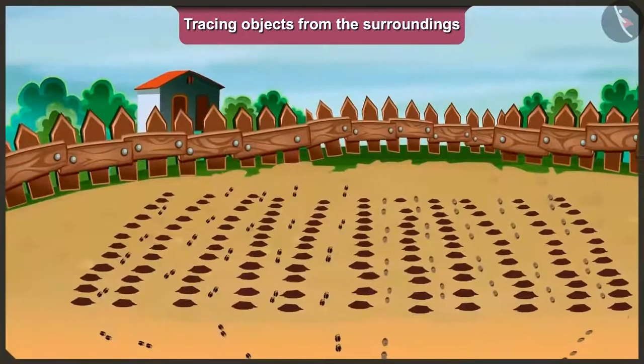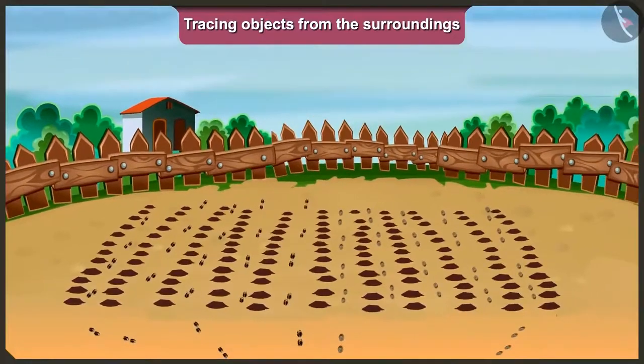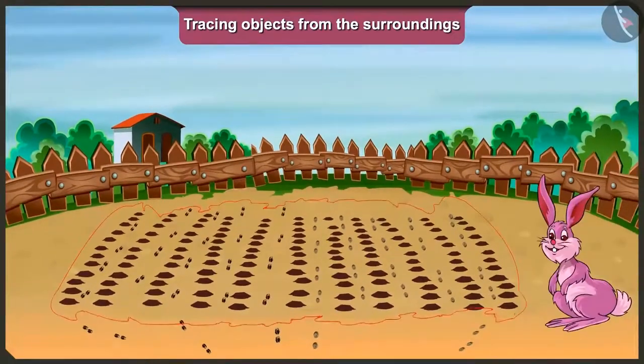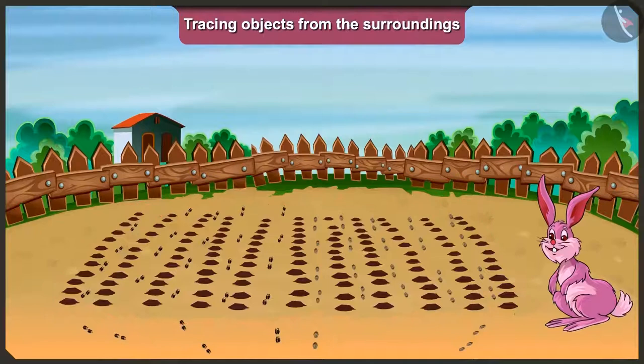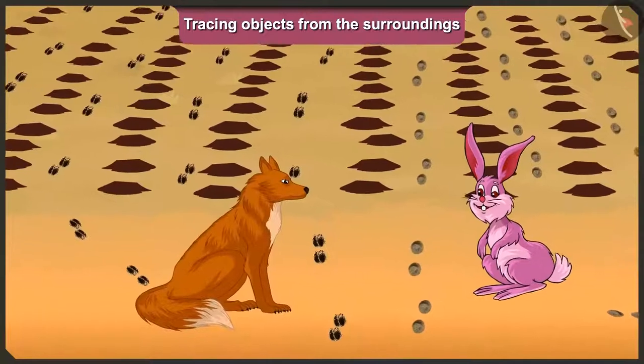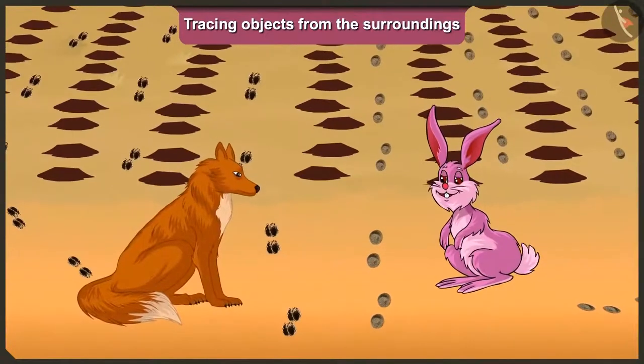But when he returned, all of the carrots from his farm were missing. When he saw this, he immediately called his friend, the clever fox. When the fox looked carefully at the farm, he found two types of traces of feet.